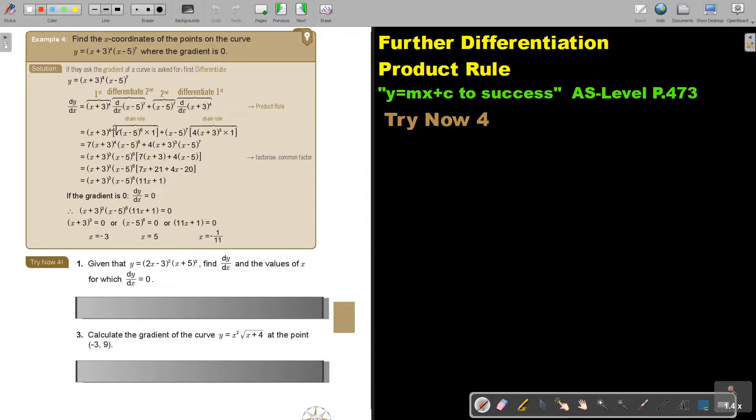If I differentiate, this is the chain rule. So the outside, do the short way. So it's 7, I subtract 1, 6, multiply the inside and it's just 1. I rewrite, I differentiate. It's 4, subtract 1, 3, multiply, differentiate the inside 1.